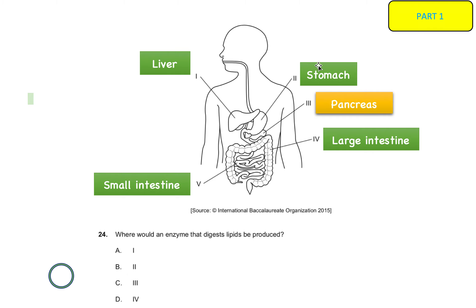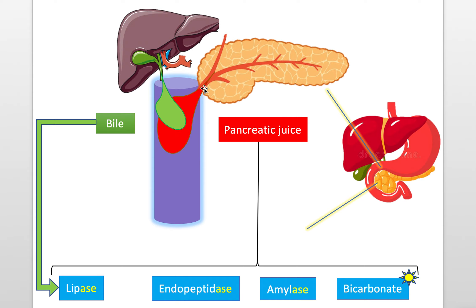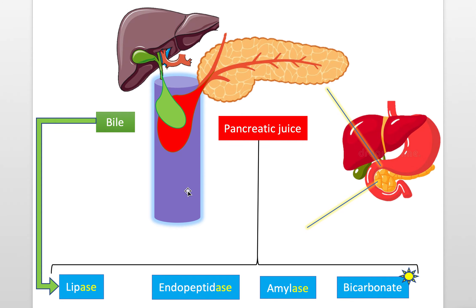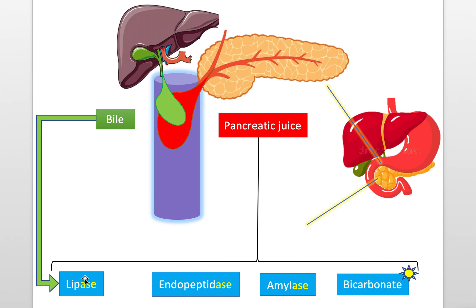Option B says the stomach — the stomach does not make anything that breaks down fats at all; it only makes things that break down proteins, so it can't be B. Option C says the pancreas, and yes, that is correct. The pancreas releases pancreatic juice into the small intestine — the blue pipe in the diagram. That pancreatic juice includes lipase, endopeptidase, amylase, and bicarbonate. Lipase breaks down fats and it ends in '-ase,' confirming it is an enzyme.